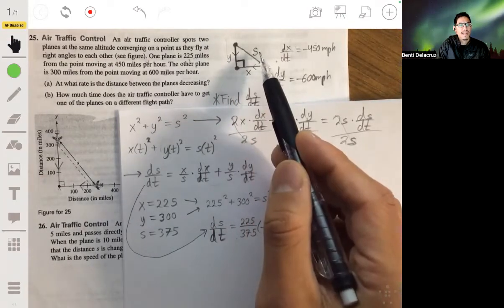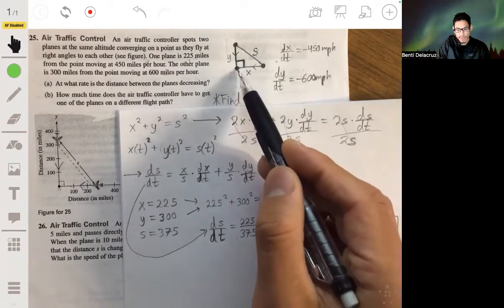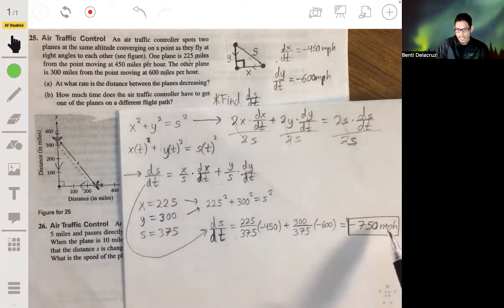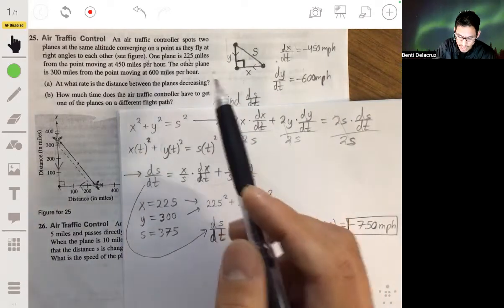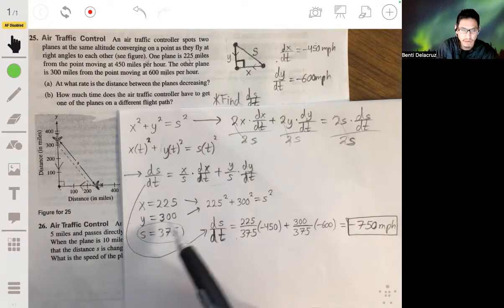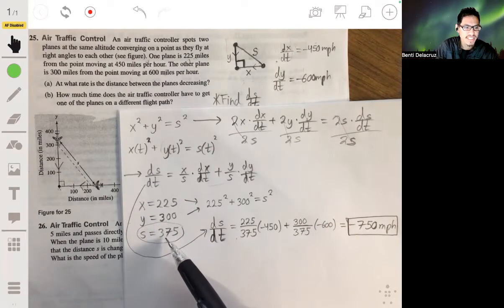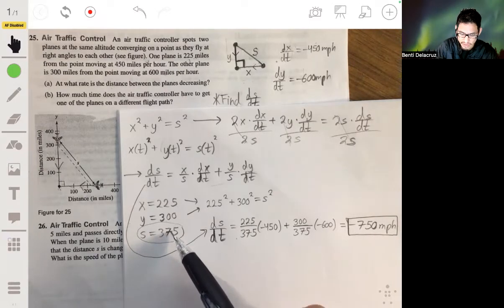So let's just think about this. At this point when we're calculating, when we're doing this problem, the distance is 375 miles. They're 375 miles away. If the distance is decreasing at a rate of 750 miles per hour, we essentially want to see when would this get to zero going at this rate.